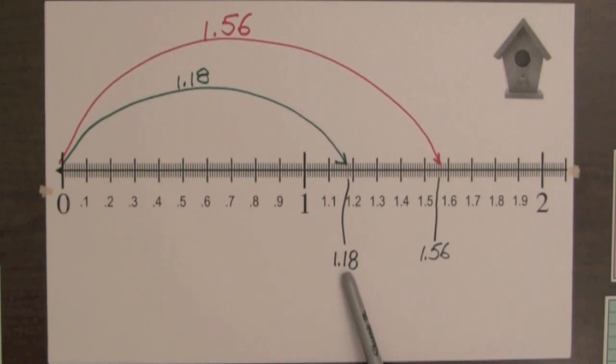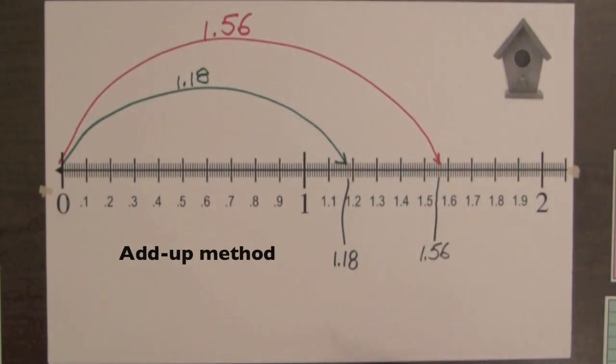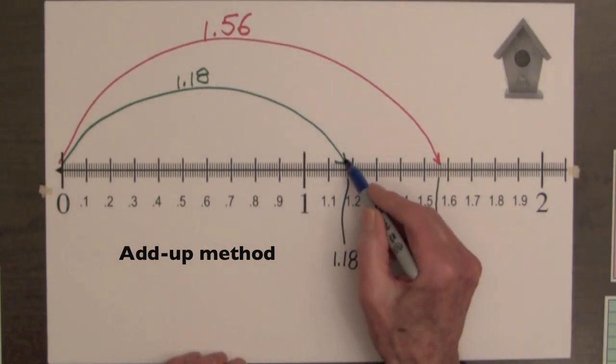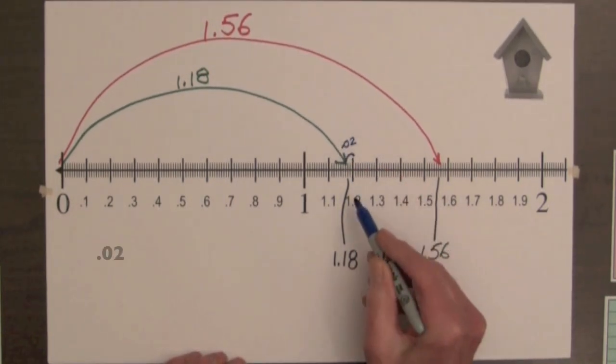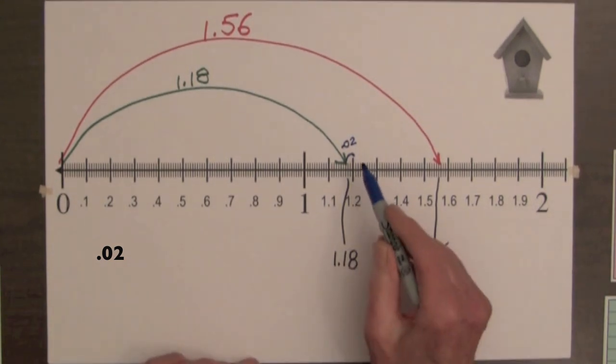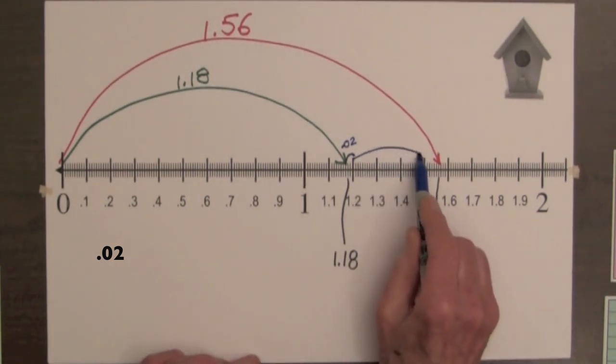The difference in these mixed decimals can be found by counting the hundredths between the arrows. We can either count back or we can count forward using the add up method. Starting at 1.18, it's 2 hundredths to 1.2.